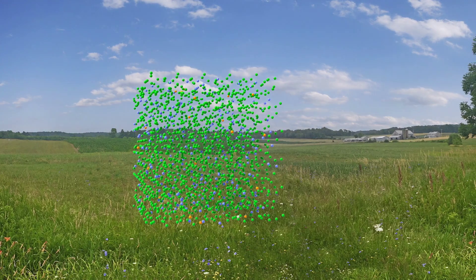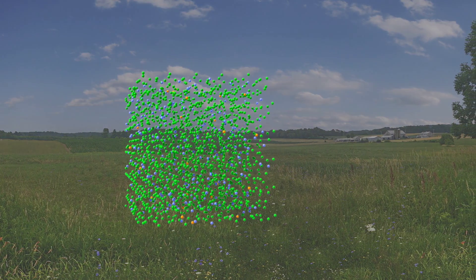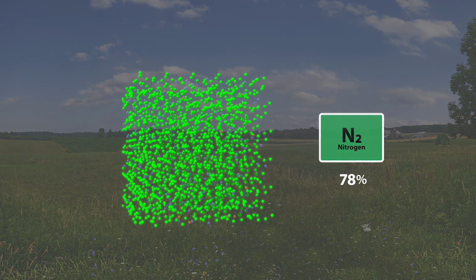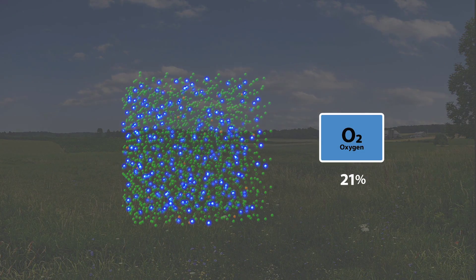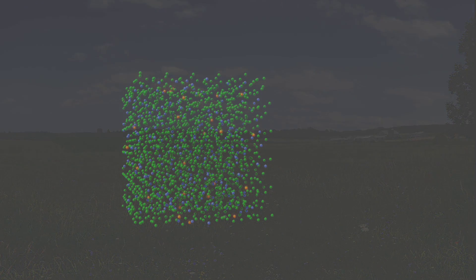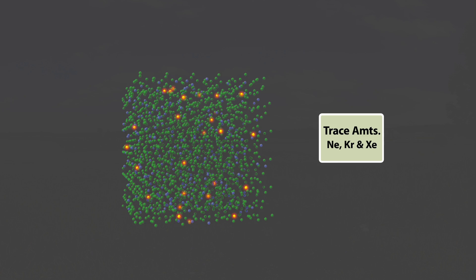Air is made up of different molecules. 78% of air is nitrogen, 21% is oxygen, and the remaining 1% is mostly argon, with traces of neon, krypton, and xenon.